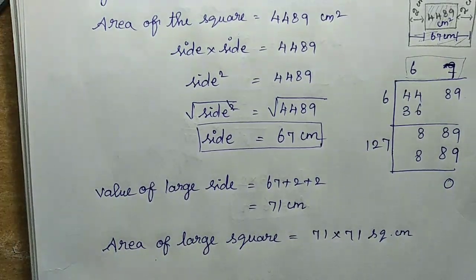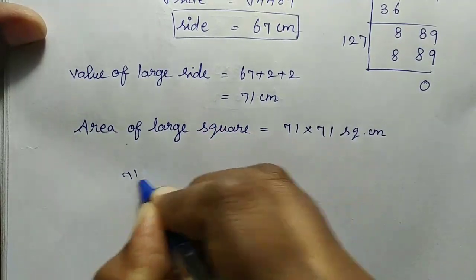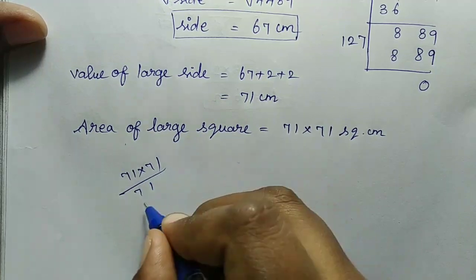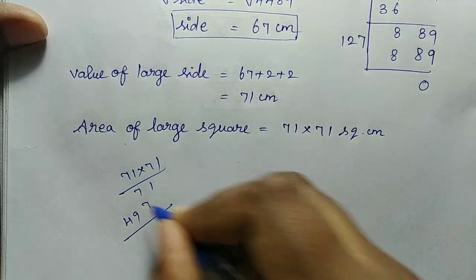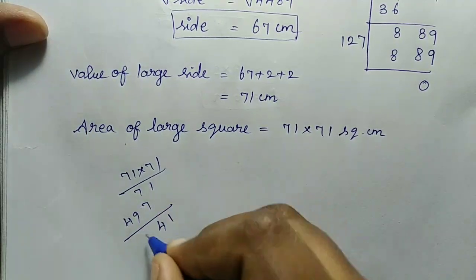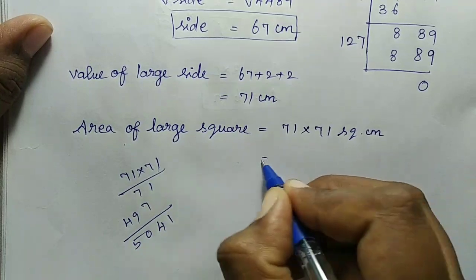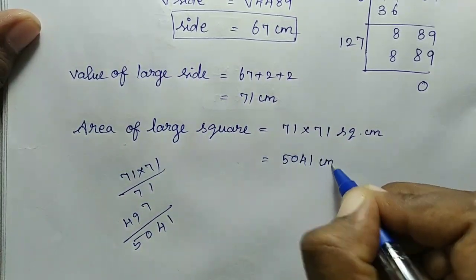71 multiply 71. 1 times 1 is 1, 1 times 7 is 7. 7 times 1 is 7, 7 times 7 is 49. So 1, 14, remaining 1, 10, 0, remaining 1, 5. The result is 5041 cm square.